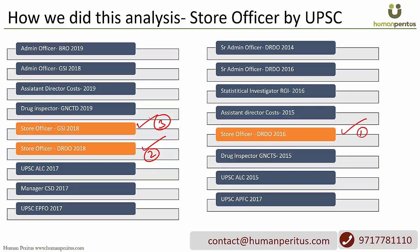We analyzed these three papers but did not stop there. We also looked at other UPSC recruitment exams where we have expertise — admin officer exam, ALC, EPFO, ESIC, DAD, and so on. For example, the keyword 'Indian Union' appears in the admin officer exam syllabus as well, helping us understand the boundary of that term. Similarly for general mental ability.